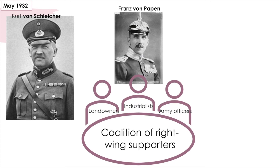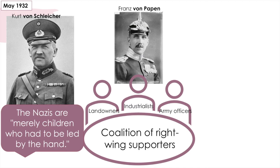Nevertheless, Hitler agreed to support the coalition if the ban on the SA was removed, and Schleicher's coalition took power. Von Schleicher assumed that they could control the Nazis, saying they were merely children who need to be led by the hand. But Hitler and the Nazi Party were, for the first time, part of the government of Germany.